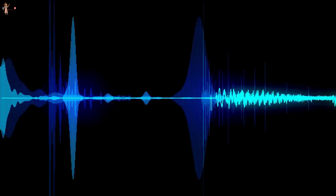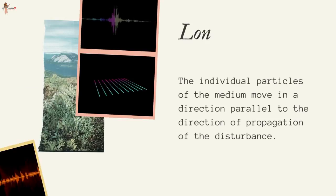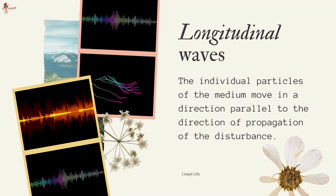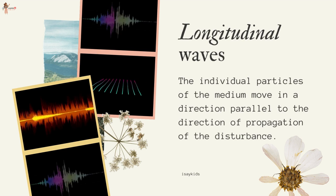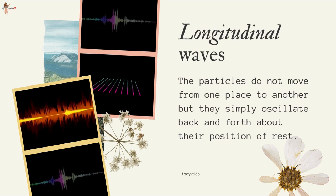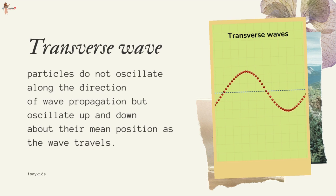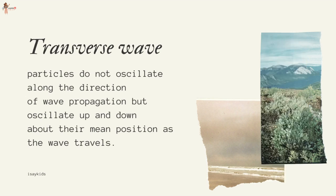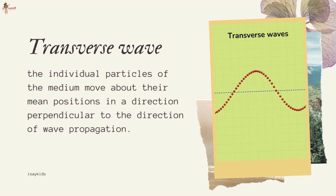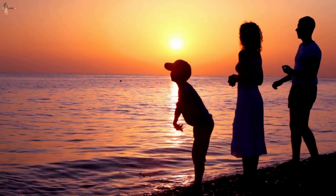Sound waves are longitudinal waves. Sound propagates in the medium as a series of compressions and rarefactions. In longitudinal waves, the individual particles of the medium move in a direction parallel to the direction of propagation of the disturbance. The particles do not move from one place to another but simply oscillate back and forth about their position of rest. There is also another type called transverse waves — in a transverse wave, particles oscillate up and down about their mean position as the wave propagates, in a direction perpendicular to the direction of wave propagation. When we drop a pebble in a pond, the waves on the water surface are an example of transverse waves.